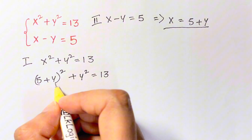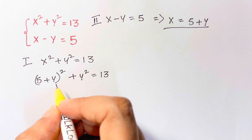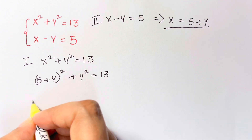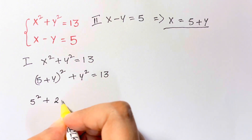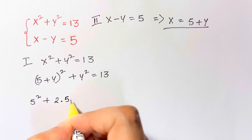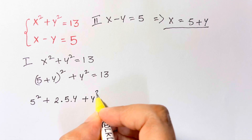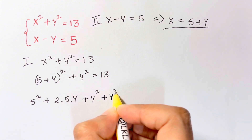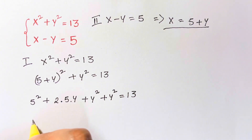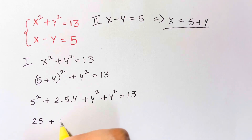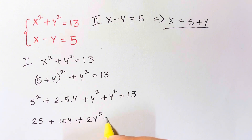This is in the form of (a plus b) whole square, which is a squared plus 2ab plus b squared. So this is our a and this is our b. So 5 squared plus 2ab — a is 5, b is y — plus b squared, that's y squared. And then you have again a y squared, which is equal to 13. 5 squared is 25, 2 times 5 is 10y, plus y squared plus y squared is 2y squared, is equal to 13.